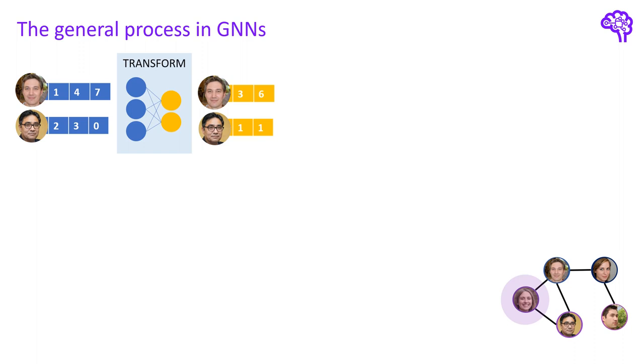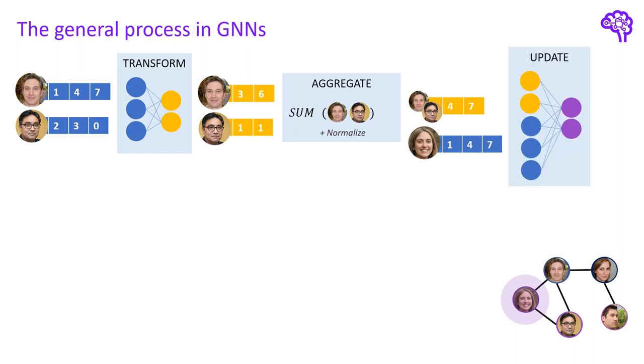These transformed representations are then aggregated in some way. The important thing here is that this aggregation is permutation invariant. That means the order of our nodes is not relevant. These aggregations are often also normalized according to the degree of the node, which means how many neighbors a node has. What we retrieve is a summarized representation of Alice's neighborhood in the graph. Finally, we combine the original node features with the aggregated neighbor embedding. And this can be again any differential function such as another MLP, a gated recurrent unit or just a sum.